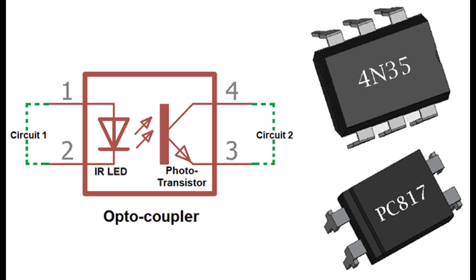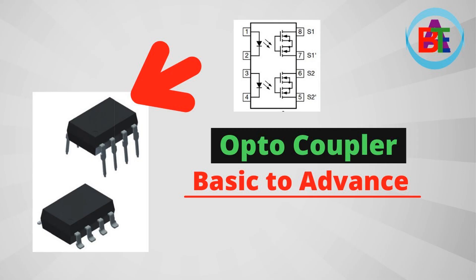Signal transfer in the context of optocouplers refers to the process by which an electrical signal is transmitted from the input section to the output section while maintaining electrical isolation. Optocouplers achieve this through the use of light. When an electrical signal — such as a voltage or current — is applied to the input terminals, it controls the current through the LED, causing it to emit light. The intensity of the emitted light is directly proportional to the magnitude of the input signal; in other words, the input signal modulates the light emitted by the LED.